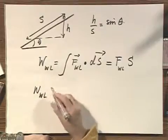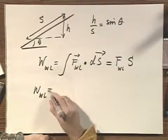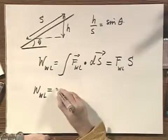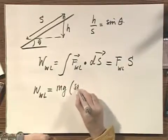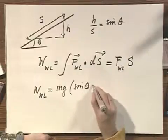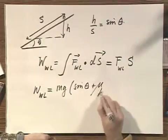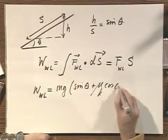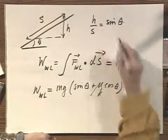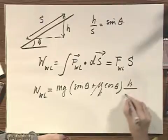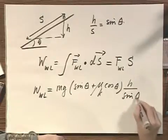So the work that Walter Lewin will have to do is the force by Walter Lewin, which we already calculated, which is mg times the sine of theta plus mu k times the cosine of theta. That's my force. And s equals h divided by sine theta. So this is the total work that I have to do.